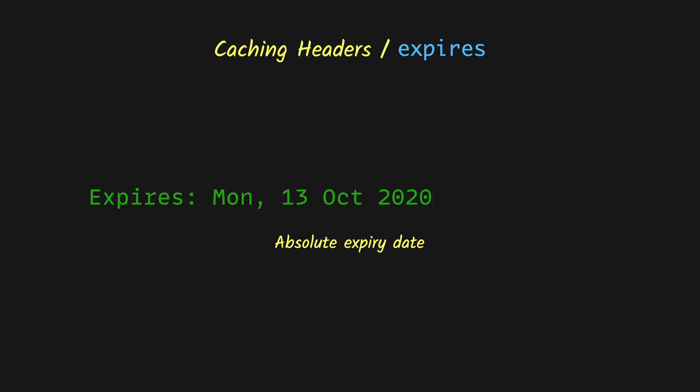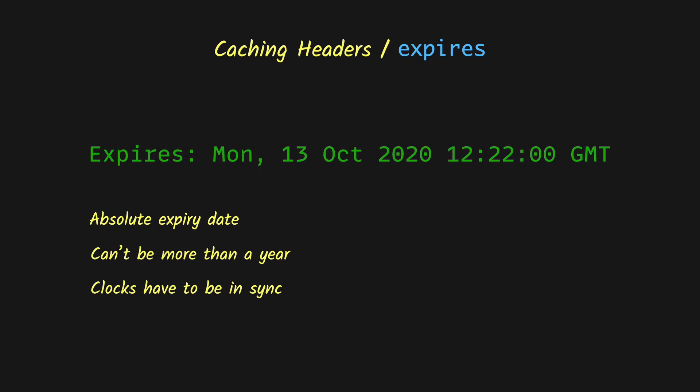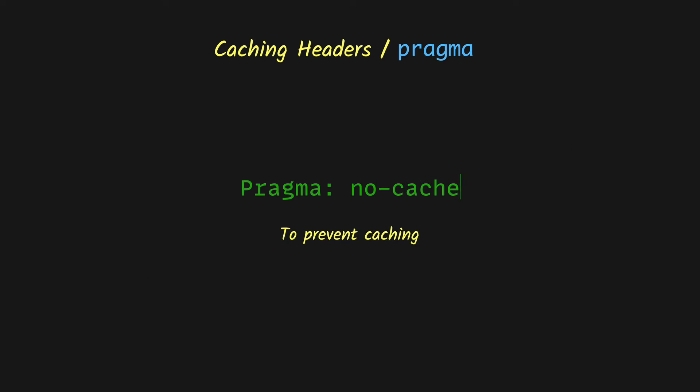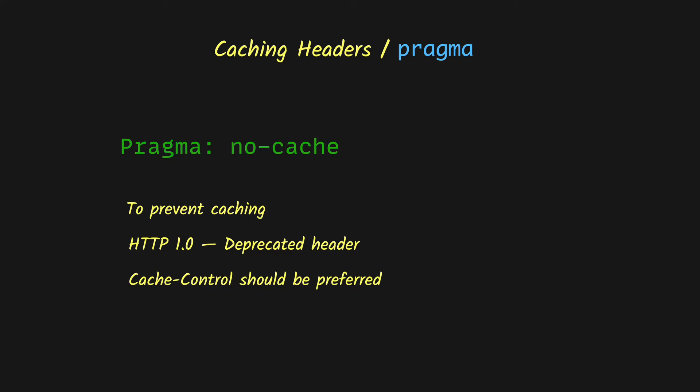First we have the Expires header. Its value is an absolute expiry date until which the response can be cached. Note that the value can't be more than one year, and if you provide an invalid value or wrong date format the response will be considered stale. Next we have the Pragma header — the only possible value is no-cache. It is a pre-HTTP 1.1 header used to prevent caching. You should prefer Cache-Control over it, but you might still see it used for backward compatibility, so that clients not supporting Cache-Control can avoid caching.